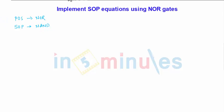But a tricky question is asked many times in which they ask you to implement a POS form of equation using NAND or a SOP form of equation using NOR. So there is a cross connection. They might ask you in this manner or in this manner. So what we are going to see here is given the equation in the SOP form and we need to convert it with the help of NOR gates.